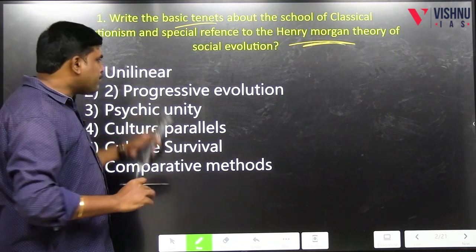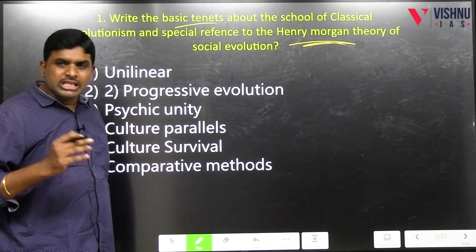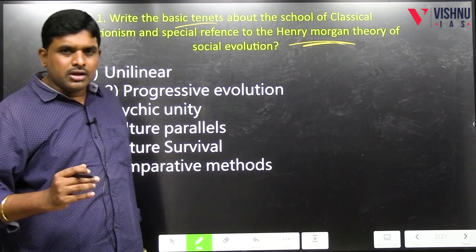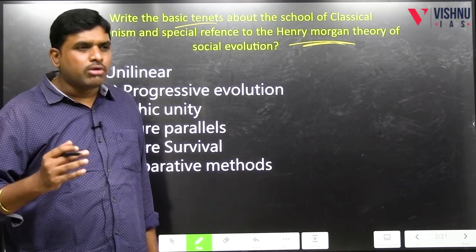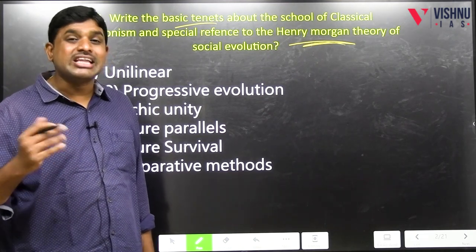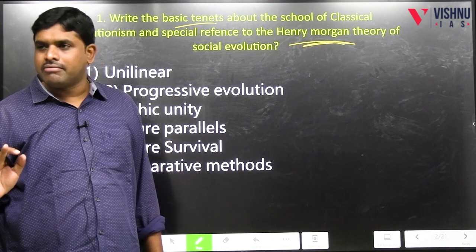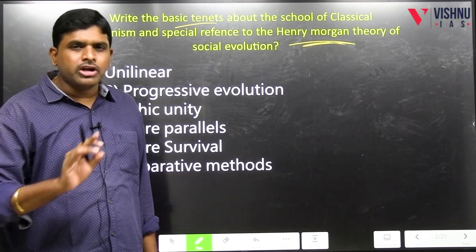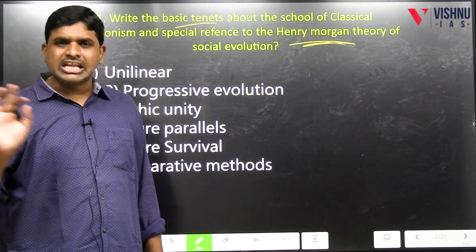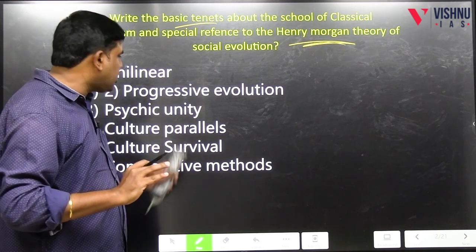Number 2: Progressive evolution. The evolution is progressive — the evolution is forward, the evolution is never backward. This is the second contribution of Classical Evolutionism.